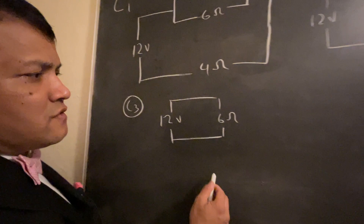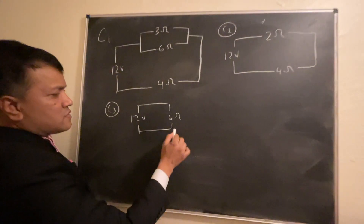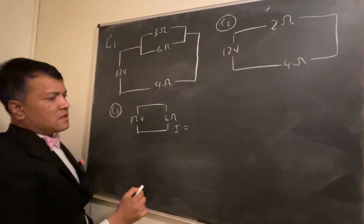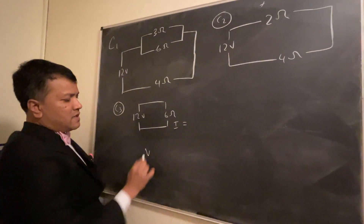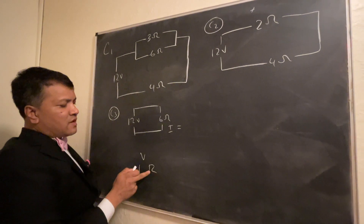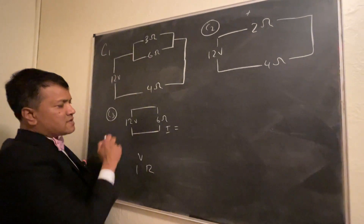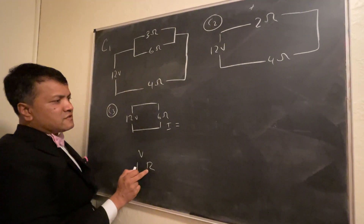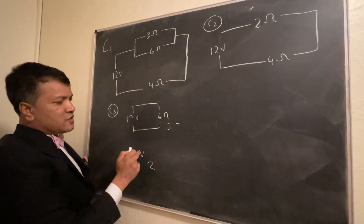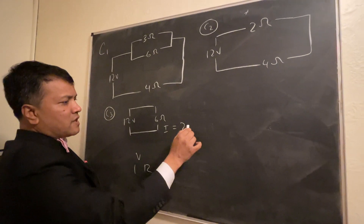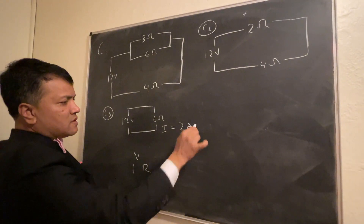Now we can use Ohm's Law to find the current. Current I equals V over R. Voltage is 12 and resistance is 6, so 12 divided by 6 is 2. The current is 2 amps.